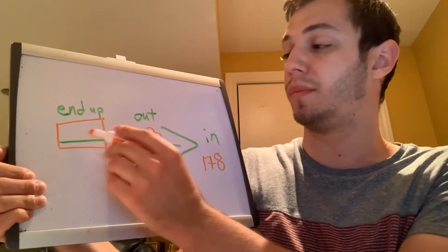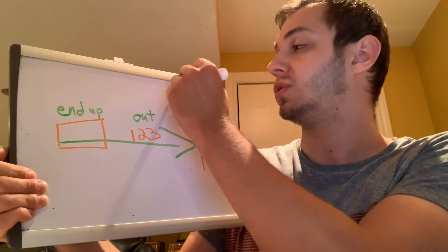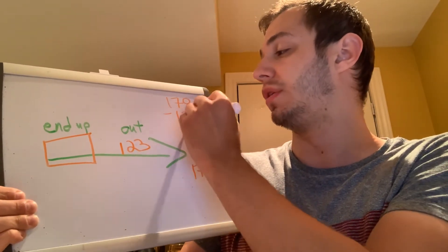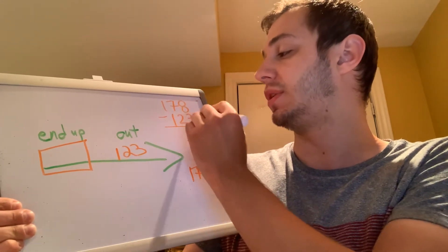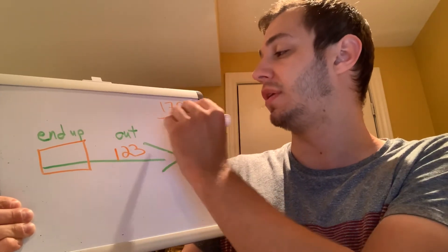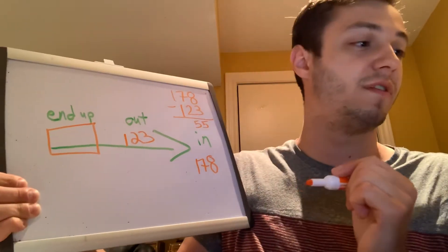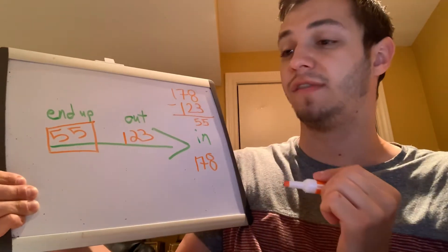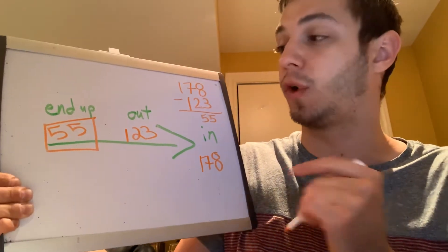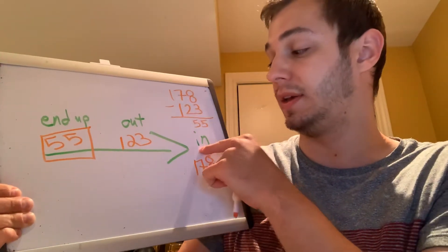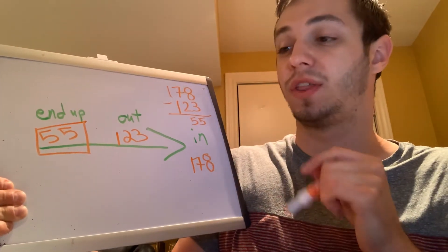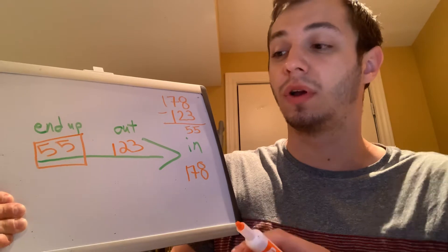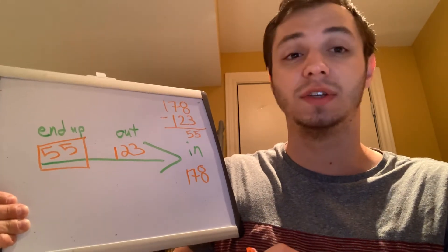In order to find this small number we have to subtract: 178 minus 123. 8 minus 3 is 5, 7 minus 2 is 5, so we have 55 gallons. We ended up with 55 gallons. We're going to use the same format of end up, out, and in for the next three number families. You can pause the video now, try working on those number families, and then I'll see you in part four.